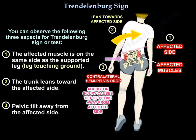You can observe the following three aspects of the Trendelenburg sign: first, the affected muscle is on the same side as the supported leg — meaning the leg on the ground; second, the trunk leans towards that side; and third, there is a pelvic tilt away from the affected side.